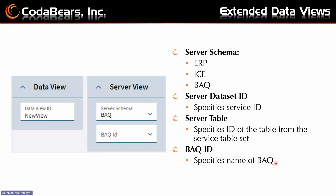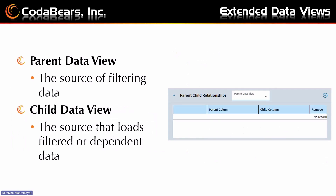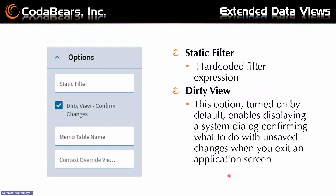That looks like the previous version when you're inputting either an ERP, ICE, or other server schemas. Our next section is the parent-child relationship section. The parent data view is going to be the source of the filtering data, while the child data view is the source that loads the filtered or dependent data. This is where you can create links between different tables. In custom views, you're allowed to pass a value from the parent into a method called to load the child data, but a lot of data views are very context-aware, so a lot of the behavior is automatic.